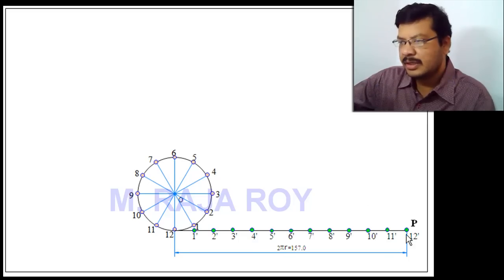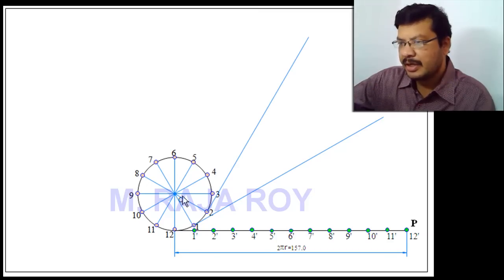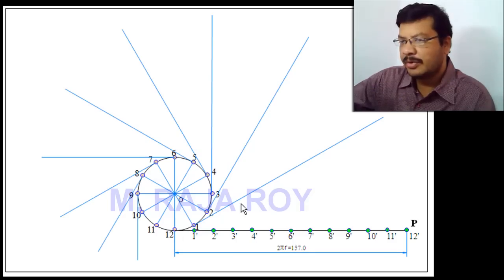Next, assume this starting point is P. Now draw tangents to the circle at points 1, 2, 3, 4, and so on up to 12. To draw the tangent at point 1, O1 is the normal, and perpendicular to O1 you draw a line — that will be the tangent to the circle. In the same way, draw the tangent at point 2 by drawing a perpendicular to line O2. Repeat the procedure at points 3, 4, and up to point 11. At point 12, the tangent is already this line.